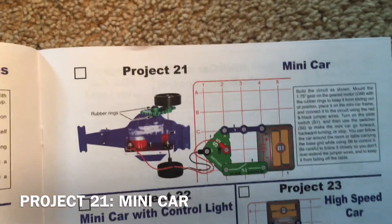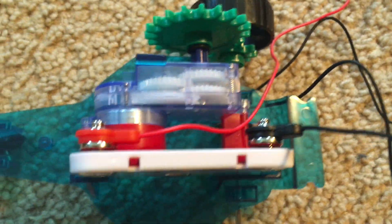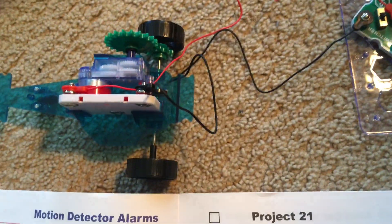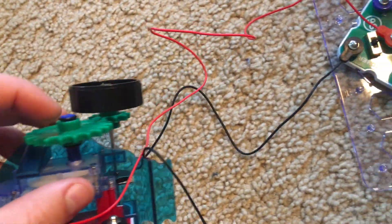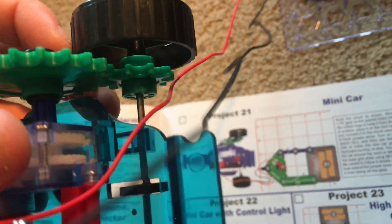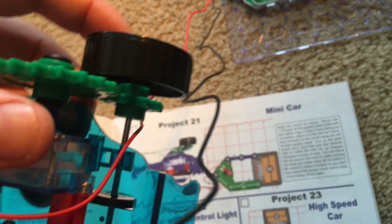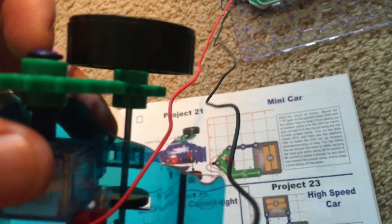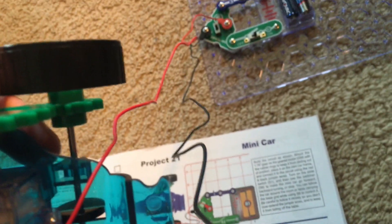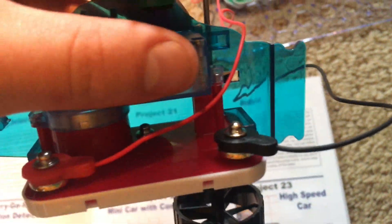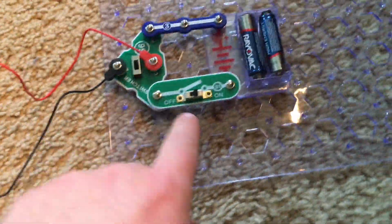Project 21 is mini-car. I mounted the gear shaft motor in the frame of the car and put a medium-sized green gear so that it aligns with the smaller green gear on the right rear wheel of the car. I used rubber rings to keep the medium-sized gear in place and then I attached the jumper wires to the motor and to this circuit.